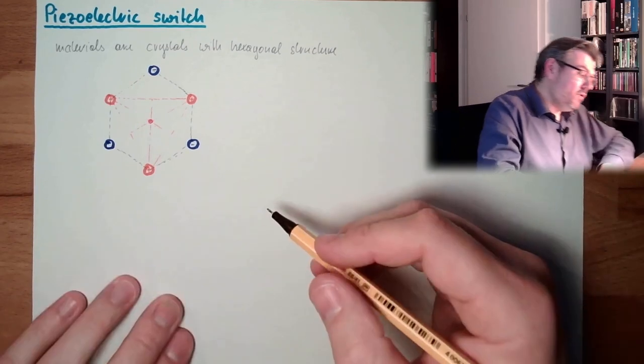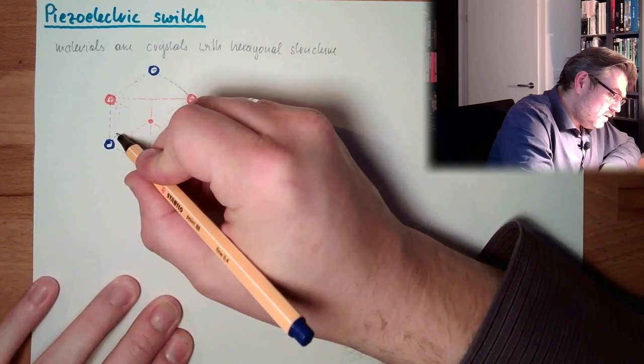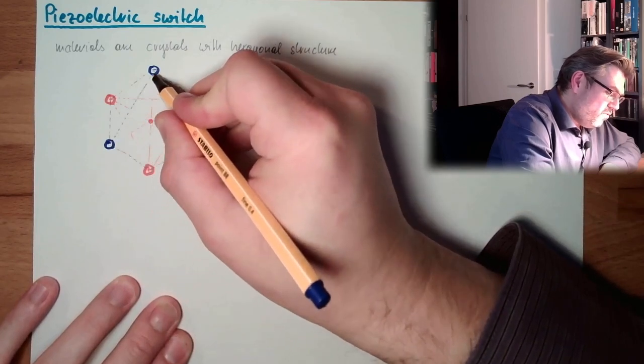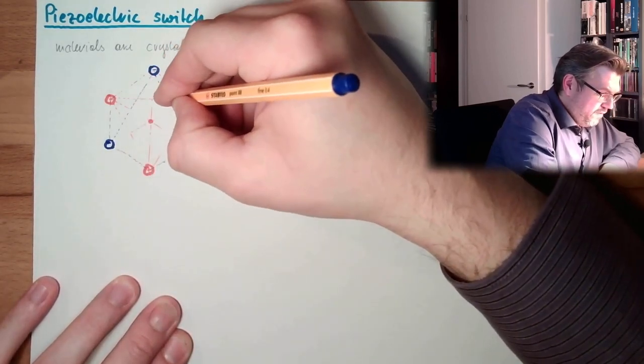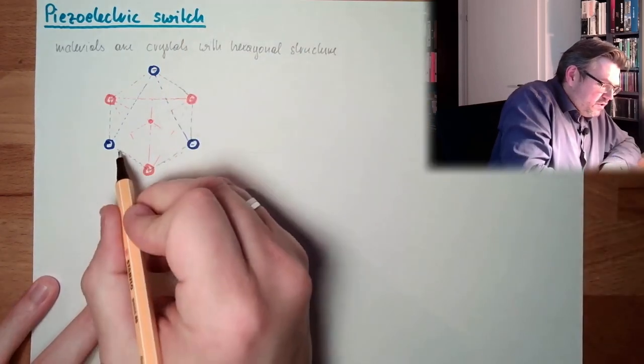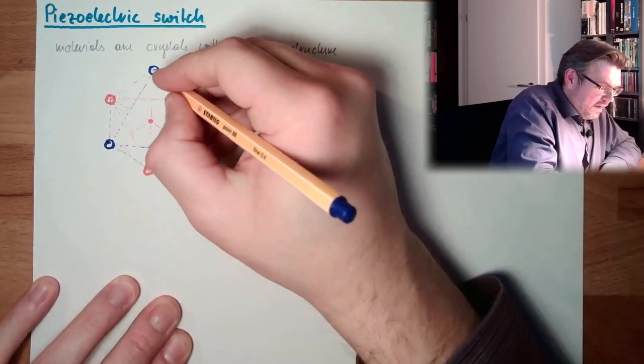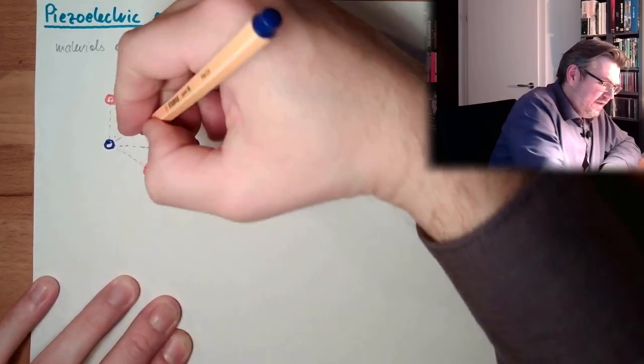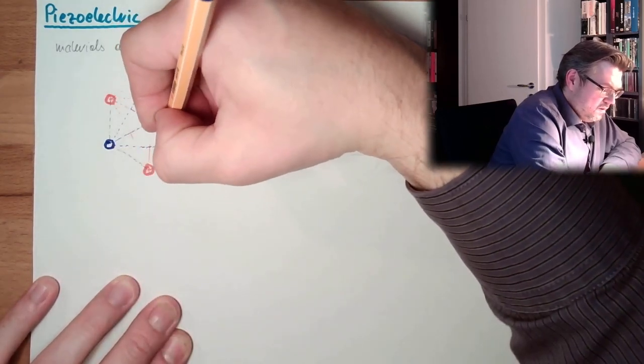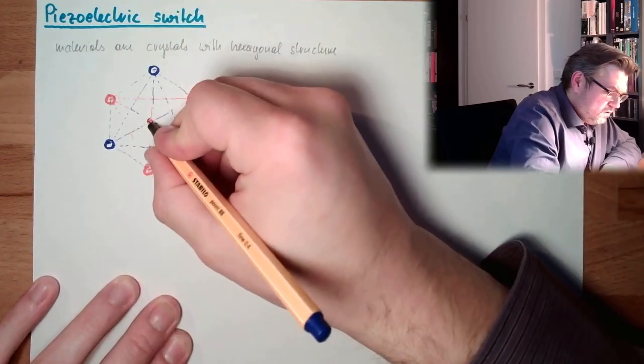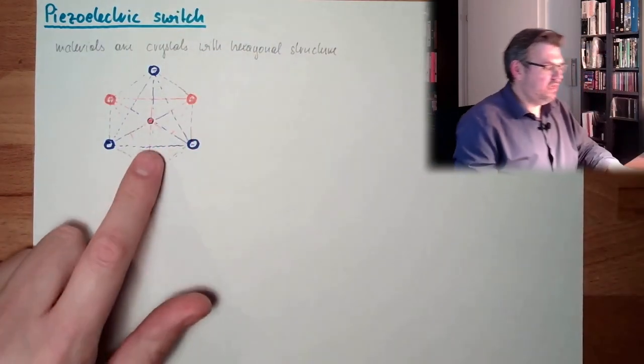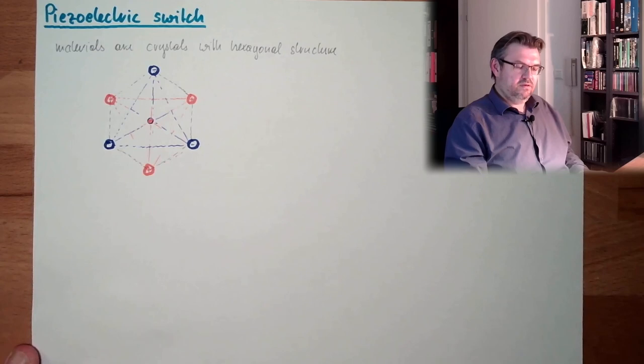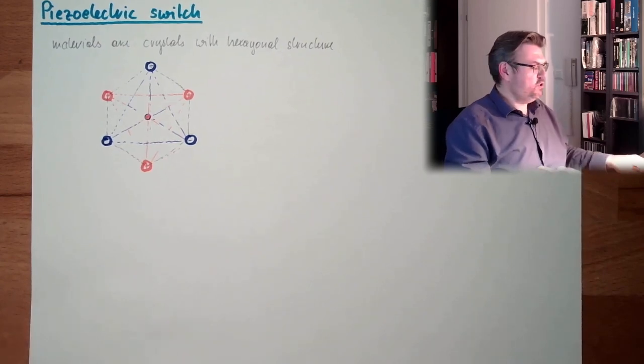Let's draw the center of the negative charge. Since this is a very uniform and very symmetric crystal structure, we will realize, aha, look at that. It is exactly at the same position. So we have also the center of the negative charges at the same position of this crystal.